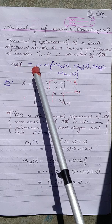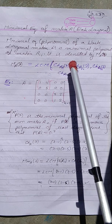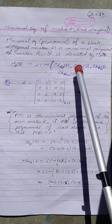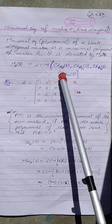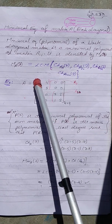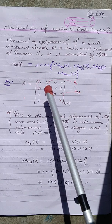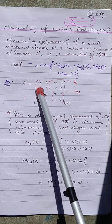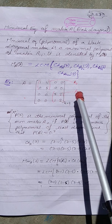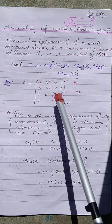Where λ is the eigenvalue, the minimal polynomial is equal to the LCM of the characteristic polynomials of each matrix in the diagonal — from the first matrix A₁₁, the second matrix A₂₂, and so on for all m matrices in the diagonal.